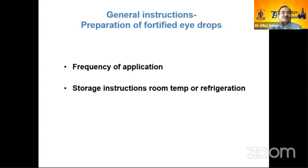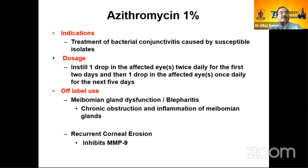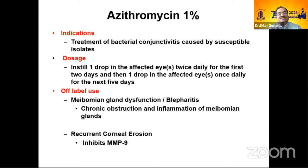For patients, frequency of application and storage instructions are critical. People have a wrong notion about refrigeration — when you say 'put in the refrigerator,' they put it in the freezer where ice cream is kept. I remember one patient who developed bilateral corneal abrasion because she was using gentian gel at night kept at 4 degrees Celsius — it had crystallized and was causing damage.